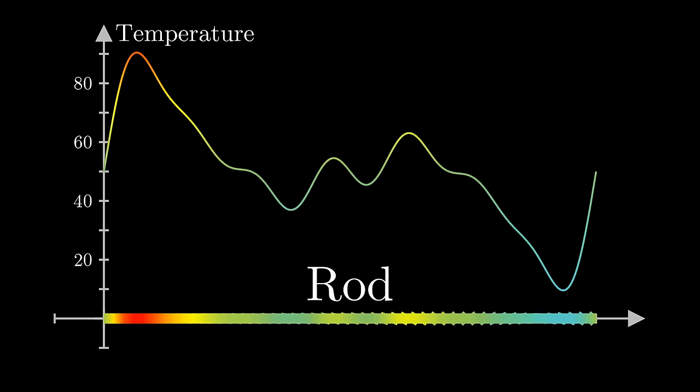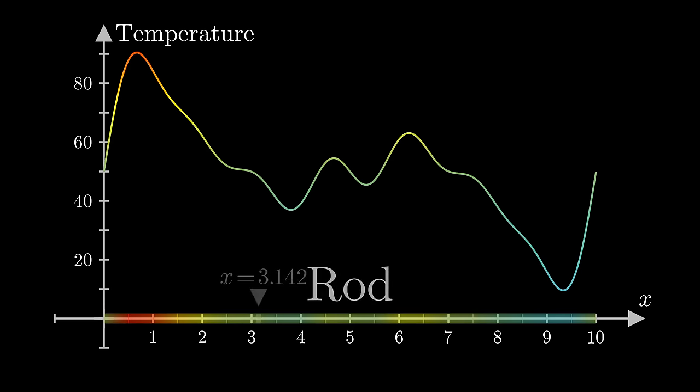We have a rod in one dimension, and we're thinking of it as sitting on an x-axis, so each point of that rod is labeled with a unique number, x. The temperature is some function of that position, T, shown here as a graph above it.